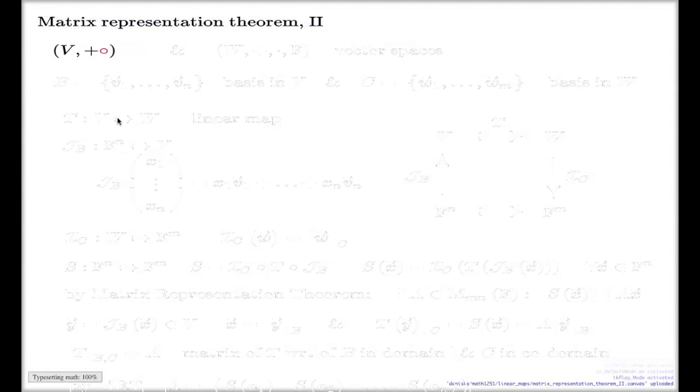Imagine I have quadruple (V, +, ·, F) for one vector space and quadruple (W, +, ·, F) for the other vector space. So imagine we have two vector spaces.